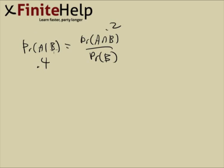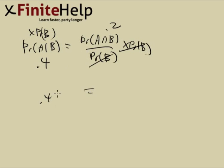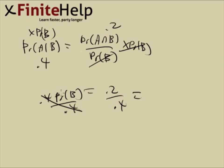So we simply multiply probability of B on both sides and divide 0.4 on both sides. Let me clean this up: we have 0.4 times probability of B equals 0.2. So now we divide both sides by 0.4, and probability of B equals 0.5.